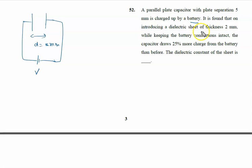It is found that when introducing a dielectric sheet of thickness 2 mm while keeping the battery connection intact. Second situation, we are putting a dielectric constant K of thickness only 2 mm, but it remains connected to the battery of voltage V.